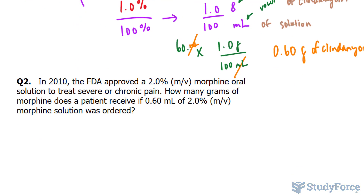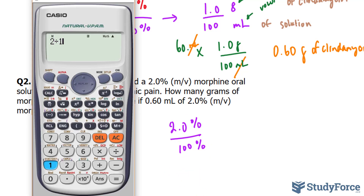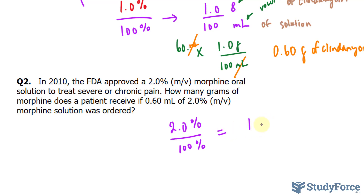In question number two: in 2010, the FDA approved a 2.0% mass per volume morphine oral solution to treat severe or chronic pain. How many grams of morphine does a patient receive if 0.60 milliliters of 2.0% mass per volume morphine solution was ordered? We'll convert 2.0% to a fraction by dividing by 100%: 2 divided by 100 gives us 1 gram of morphine per every 50 milliliters of solution.